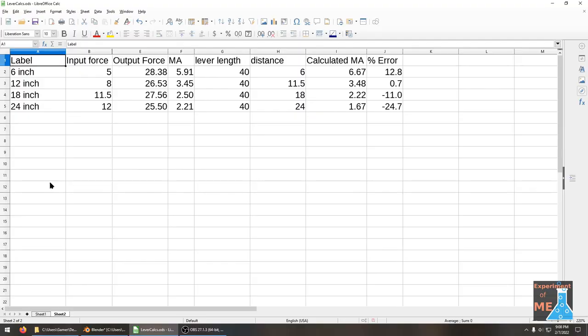So here are the calculations for the mechanical advantage test that I did. I have a label for how far away I put the lever from the anchor point. Then I have the input force, and that's how much I pulled on the fish scale that was in my hand. Here's the output force, so that's the scale that's hooked to the i-bolt.